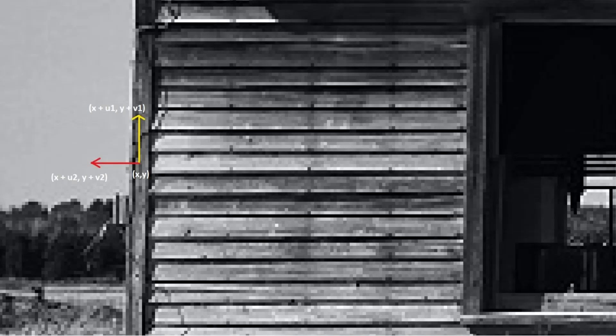In the direction along the yellow line, the intensity is not changing much. Now follow the red line. You should notice the change in intensity. For edges, intensity changes only in one direction.